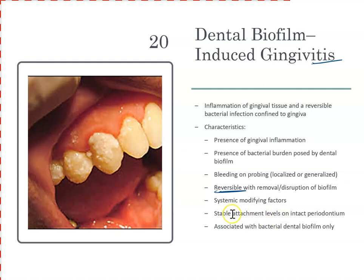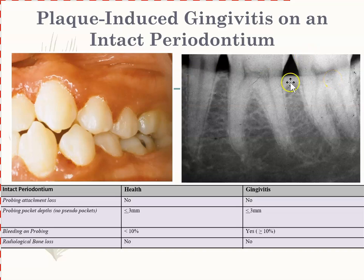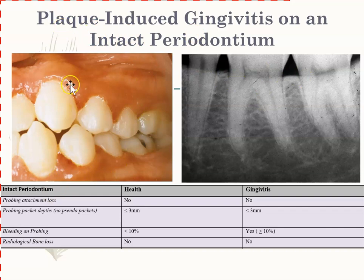With gingivitis, there are stable attachment levels — no clinical attachment loss from perio — and the inflammation is only because of plaque. Looking at a case of plaque-induced gingivitis on an intact periodontium: we see bleeding, puffy bulbous gums. But looking at the radiograph, there is no bone loss — the cortical bone is nice and flat. If you see fuzziness, that would indicate early bone loss. This is intact periodontium with plaque-induced gingivitis.